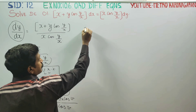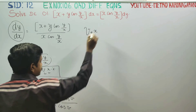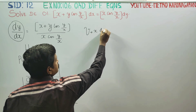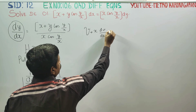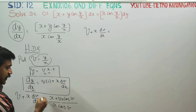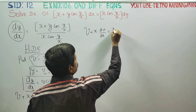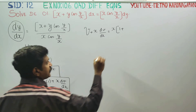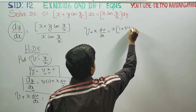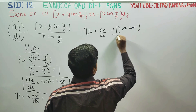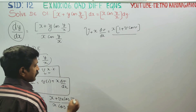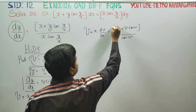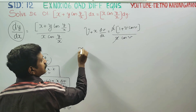After substitution, the equation becomes: v plus x dv by dx is equal to x common — 1 plus v cos v — divided by x cos v. The x cancels out.